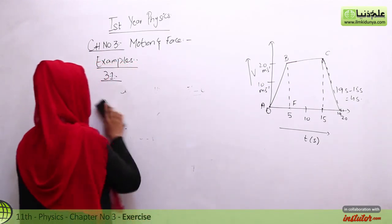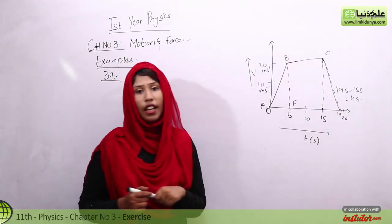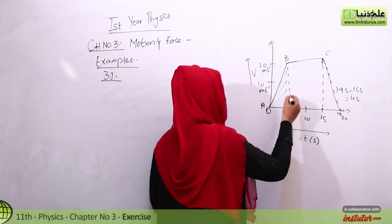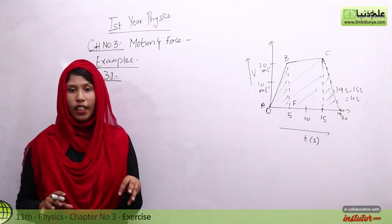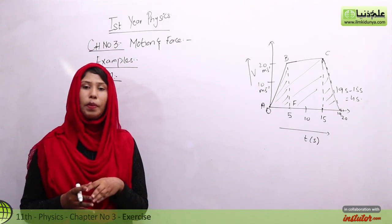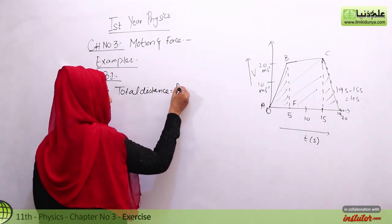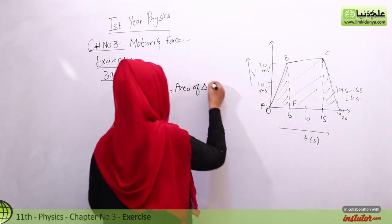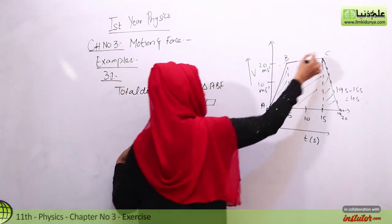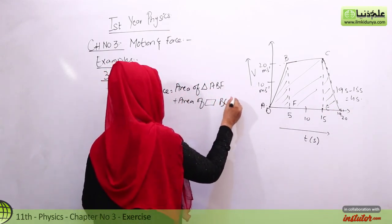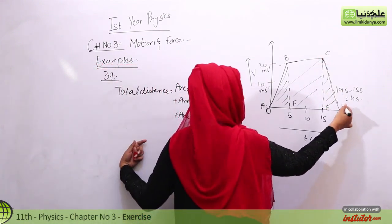For the total distance, we know that the total area under the graph equals the total distance covered. The graph is made up of three shapes: a triangle, a rectangle, and then another triangle. We divide it into these three areas and remove the sum of those three areas to get the total distance.